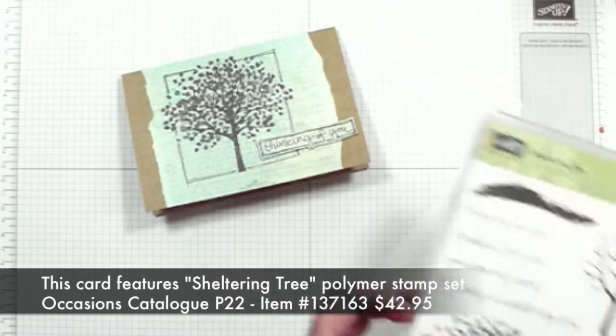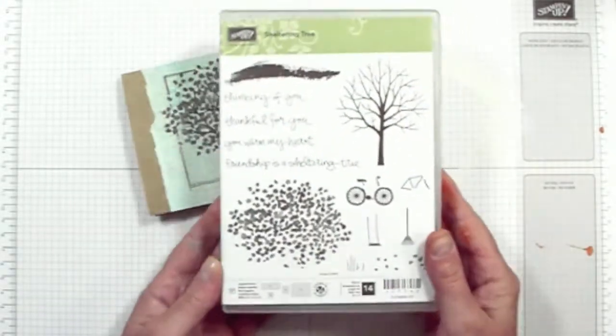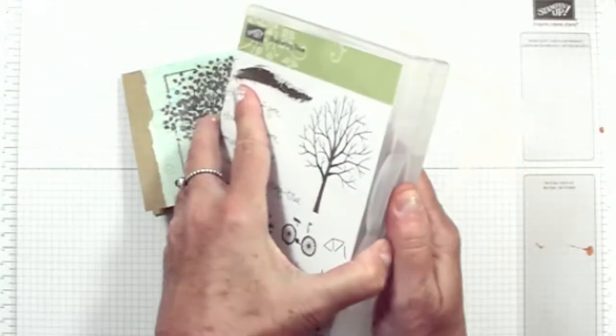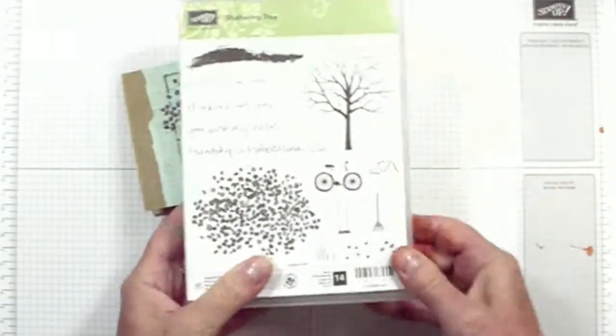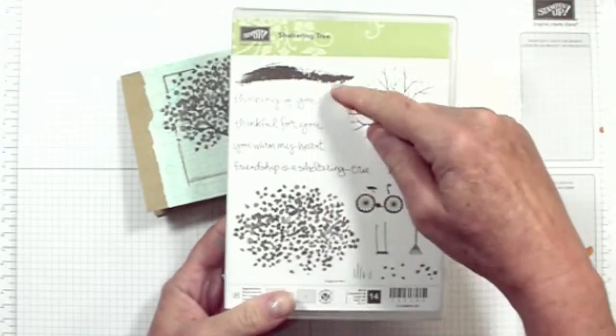We're using the Sheltering Tree stamp set from Stampin' Up. This is a polymer stamp set from the New Occasions catalogue. We'll be using the branches and the leaves and I'm using the Thinking of You greeting, but there are four greetings in this set.